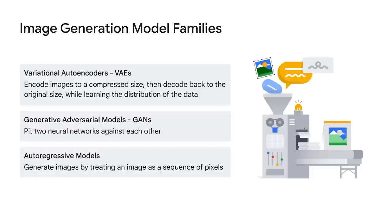Lastly, autoregressive models — these things generate images by treating an image as a sequence of pixels. And the modern approach with autoregressive models actually draws much of its inspiration from how LLMs, or large language models, handle text.